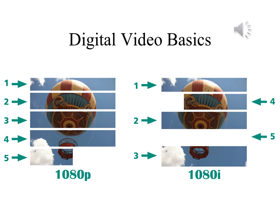In an interlaced scan, it will scan in the order 1, 3, 5, 2, and 4. If it is redrawing your screen quickly enough, you should not be able to tell which one it's using, unless you see the word 1080p or 1080i. They both indicate 1080 rows of pixels, but they will differ based on the order in which the rows are redrawn.